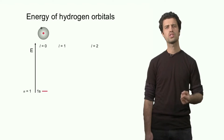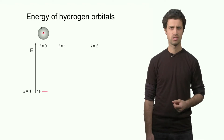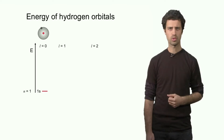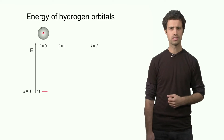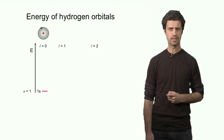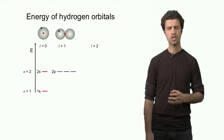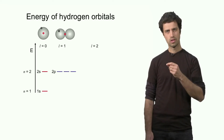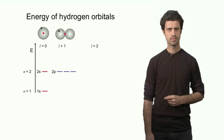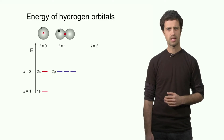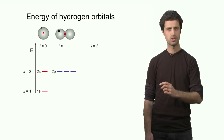Now, let us assume this electron has excess energy — some extra energy to spare. Then it can actually occupy another orbital of higher energy. What is the next orbital in line? Those are the orbitals with n equals 2: the 2s and the 2p. They have a higher energy than the levels in n equals 1, the 1s.